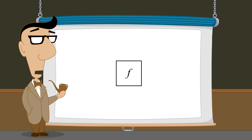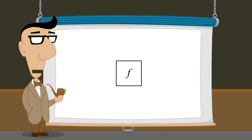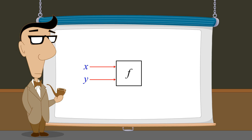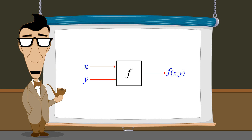But functions can also be constructed whose output depends upon multiple input variables. In functions of two real variables, x and y are typically chosen as the independent variables, and the output value for a function f is written as f of x and y. This value is typically assigned to z, the dependent variable.